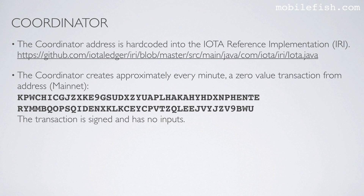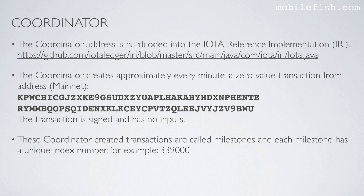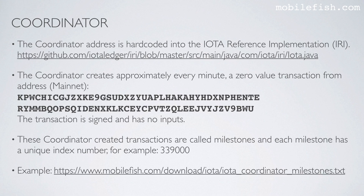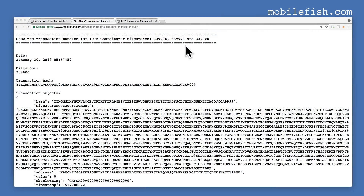The coordinator creates approximately every minute a zero-value transaction from the mainnet address. The transaction is signed and has no inputs. These coordinator-created transactions are called milestones, and each milestone has a unique index number, for example 339,000. Here are the transaction bundles for three coordinator milestones. These milestones are created on the mainnet. Let's look at milestone 339,000, created on January 13th, 2018.